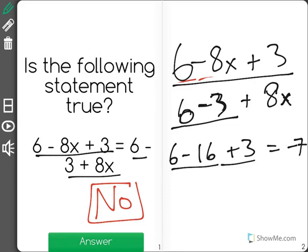In the second one, we'd have 6 minus 3, which is 3, plus 16. 8 times 2 is 16, is 19. The answers are different.